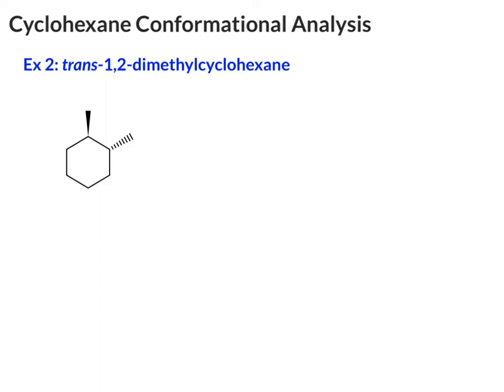You can start anywhere, and I'm just going to number clockwise starting right here. Draw both chair conformations, and then let's set carbon 1. Like we did in that last example, you can set carbon 1 anywhere on the chair, but I like to be consistent. I usually set carbon 1 as this carbon, and then after the ring flip, it flips down to that carbon. If you're consistent, then you can always get this correct.